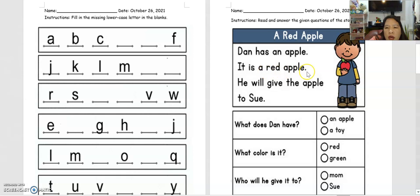Let's start now. Dan has an apple. It is a red apple. So what color is an apple again? Yes, color red. He will give the apple to Sue.